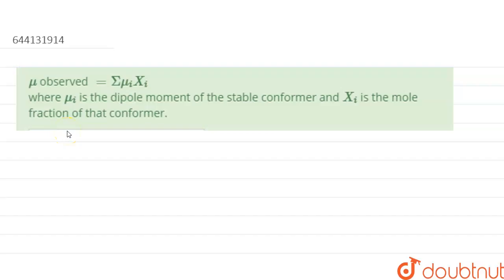The question is: μ observed equals summation of μᵢxᵢ, where μᵢ is the dipole moment of the stable conformer and xᵢ is the mole fraction of that conformer.